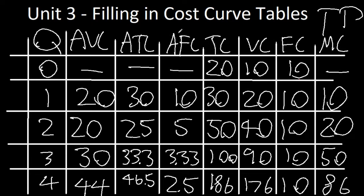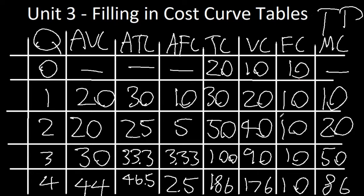So that's one of the ways you can fill in a cost curve table — first getting the easy rows and columns done first, and then figuring everything out with the information given to you. You just need to do a little bit of thinking and inferring. GPA Jesus signing out. I died for your grades.